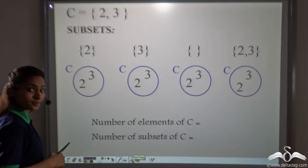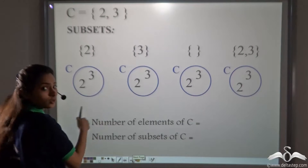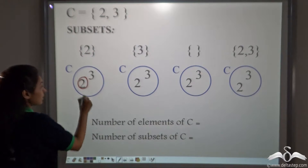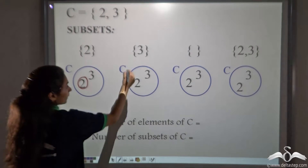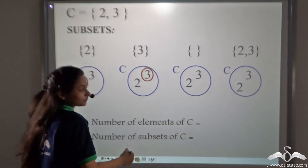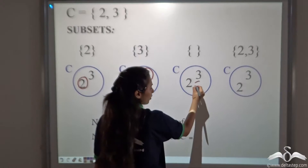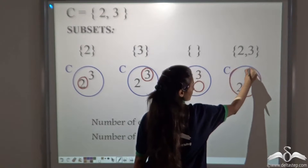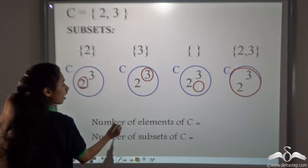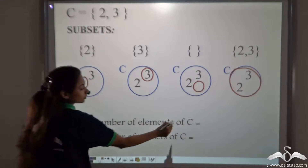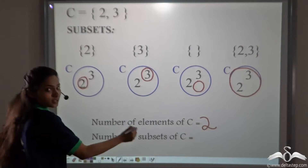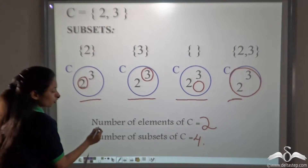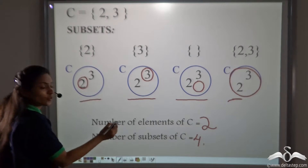We can also represent subsets on a Venn diagram. Only two can be represented as a set inside C. Only three — we can draw that set inside C. The empty set — draw it anywhere inside C with no element. And the set itself is its subset. So how many elements are there in C? Two. And how many subsets are there? Four. So when the number of elements of a set is two, you get four subsets.